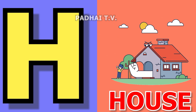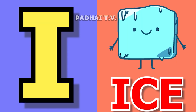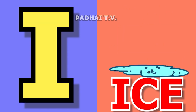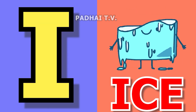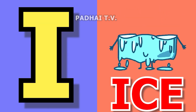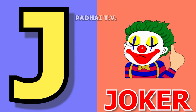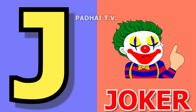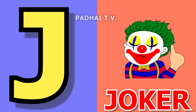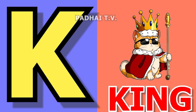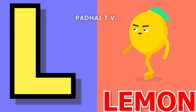H for house, house means ghar. I for ice, ice means barf. J for joker, joker means joker. K for king, king means raja.